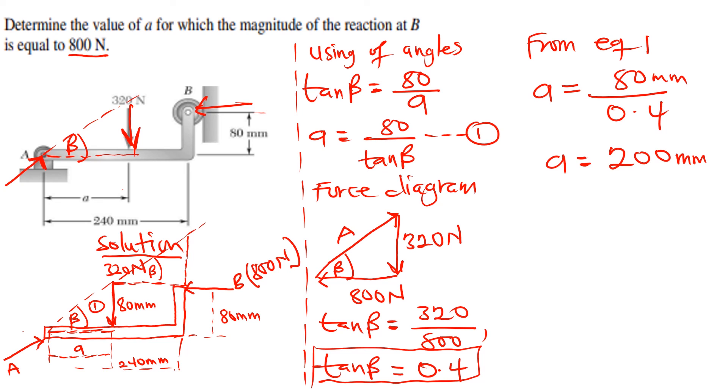So this is the value of A for which the magnitude of the resultant is 800. So the value of A is going to be 200 millimeters.